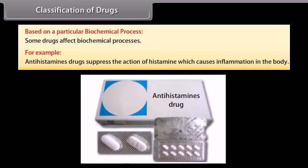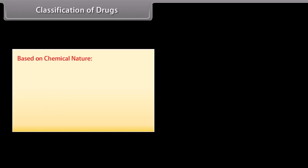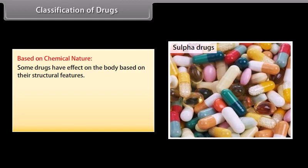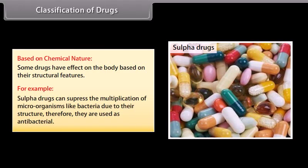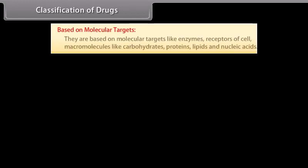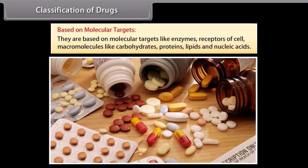Antihistamine drugs suppress the action of histamine, which causes inflammation in the body. Based on chemical nature, some drugs have an effect on the body based on their structural features. For example, sulphur drugs can suppress the multiplication of microorganisms like bacteria due to their structure; therefore, they are used as antibacterials. Based on molecular targets, drugs act on molecular targets like enzymes, receptors of cells, and macromolecules like carbohydrates, proteins, lipids, and nucleic acids.